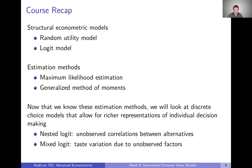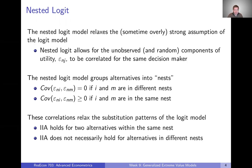Now that we know those estimation methods with the most simple model — the logit model — we're going to switch back to talking about different discrete choice models that allow for richer representations of individual decision making. This week we're talking about the nested logit model, which allows for unobserved correlations between alternatives, and we'll see why that can in many cases be an improvement over the simple logit model. Then next week we're going to talk about the mixed logit model, which allows for taste variation due to unobserved factors.